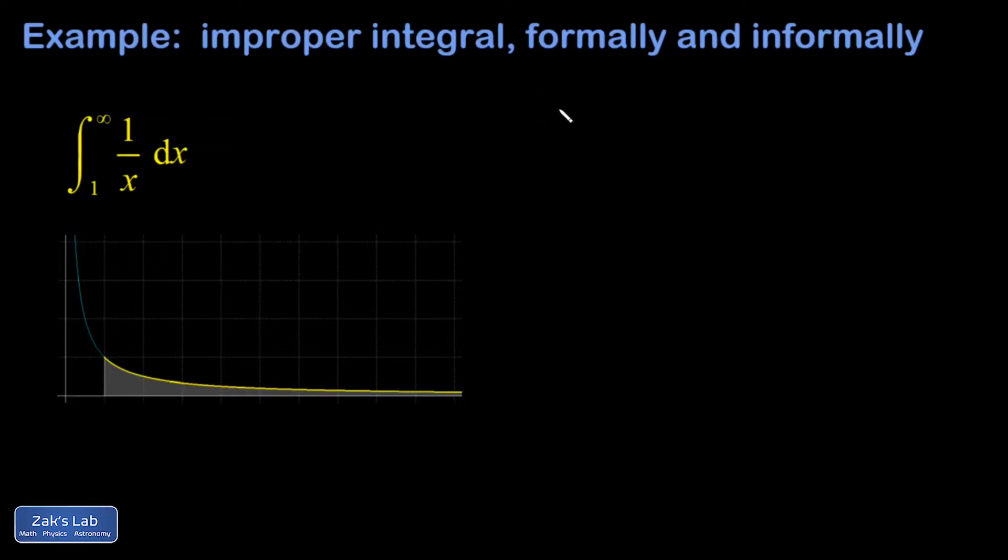So let's look at the informal approach first. In the informal approach, you just treat infinity like a number. So what I'm going to do is guess the antiderivative of 1 over x. Well, that's the natural log of x.